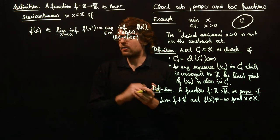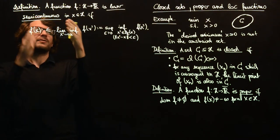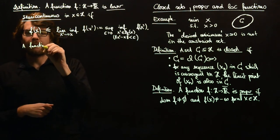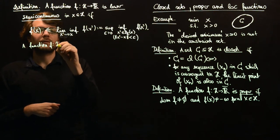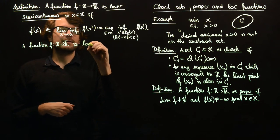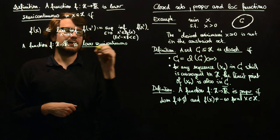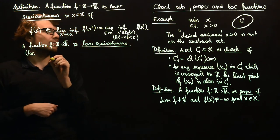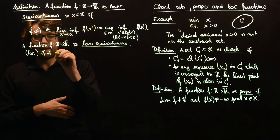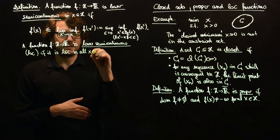That's the definition. Now let's give an example for that. By the way, I should define what the lower semi-continuous function is. So a function f to R bar is lower semi-continuous, and here without in x in H. And I usually write this as lsc if it is lsc in all x in H.